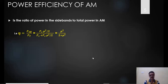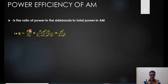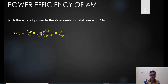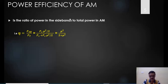Power efficiency is defined as the ratio of sideband power to total power, because only the sidebands represent useful information — the carrier power is waste. The efficiency formula is: η = PSB / PT = (PCμ²/2) / (PC(1 + μ²/2)). After cancelling PC, this simplifies to η = μ² / (2 + μ²). This is the standard formula for power efficiency in amplitude modulation.